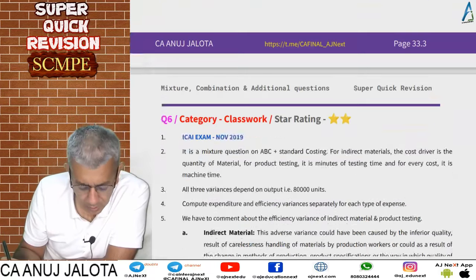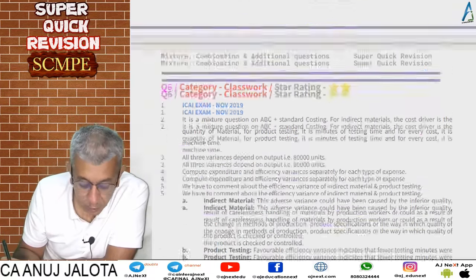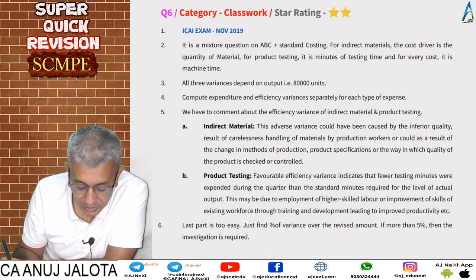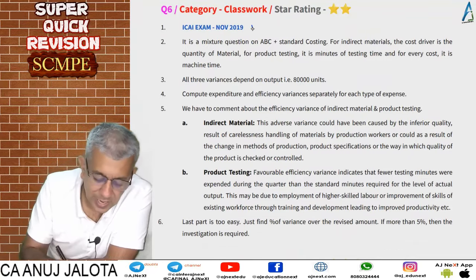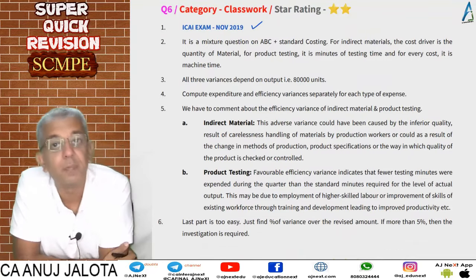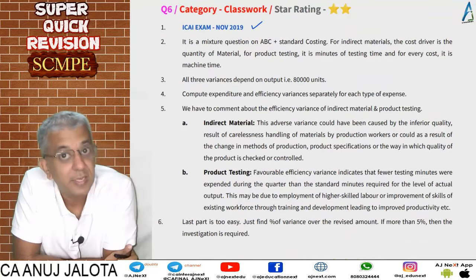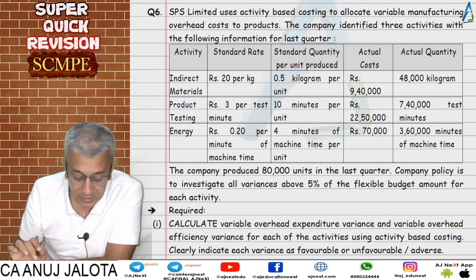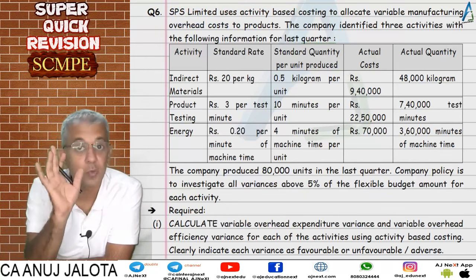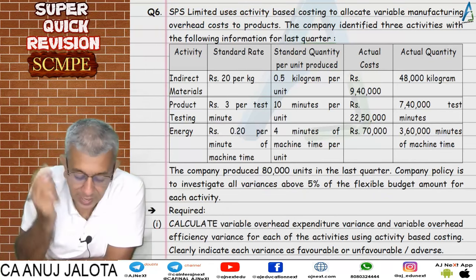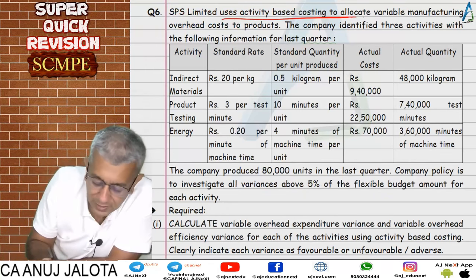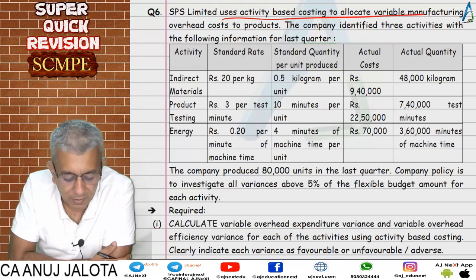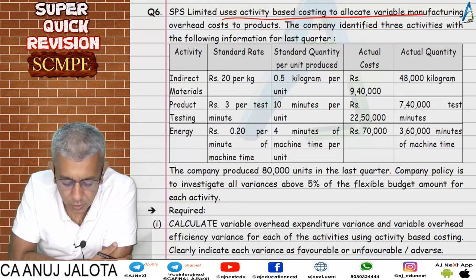Shots summary: while computing planning variances compare original standard and new standard; for operating variances compare new standard and actual; for ABC-based variances use cost drivers — orders executed for material handling and setups for setup cost. That concludes question number five. Question number six was asked in ICAI November 2019 exams.